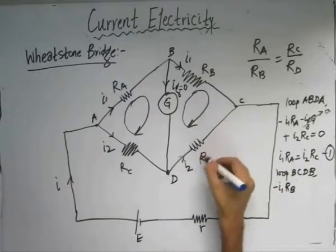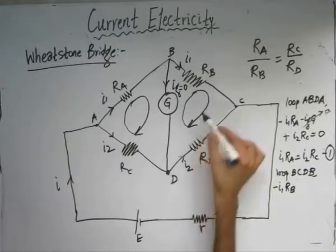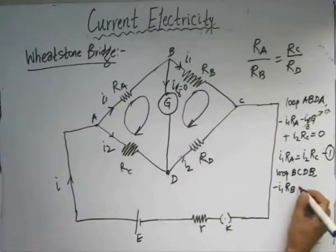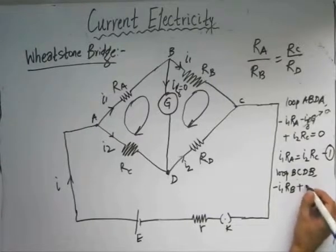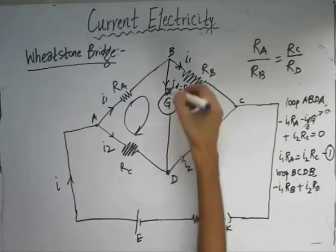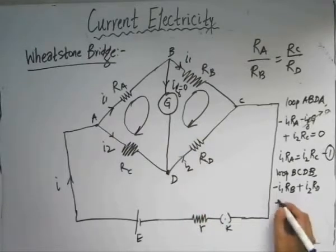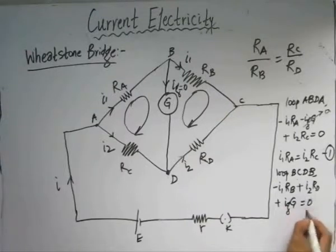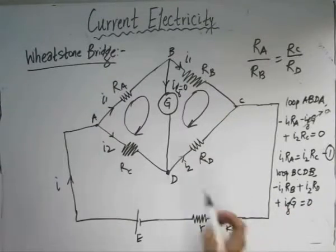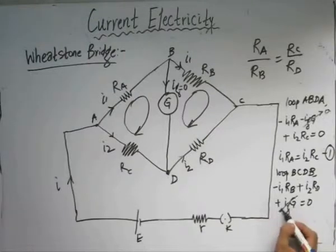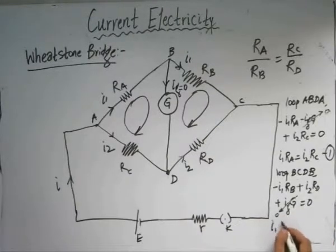The other element is resistor Rd. In this case the direction of the current and the loop are in opposite directions, so we have an increasing potential: plus I2·Rd. The galvanometer current IG and loop direction are also opposite, giving plus IG times G equals zero. Since there is no deflection in the galvanometer, that term goes to zero, so we obtain the second relationship: I1·Rb = I2·Rd.